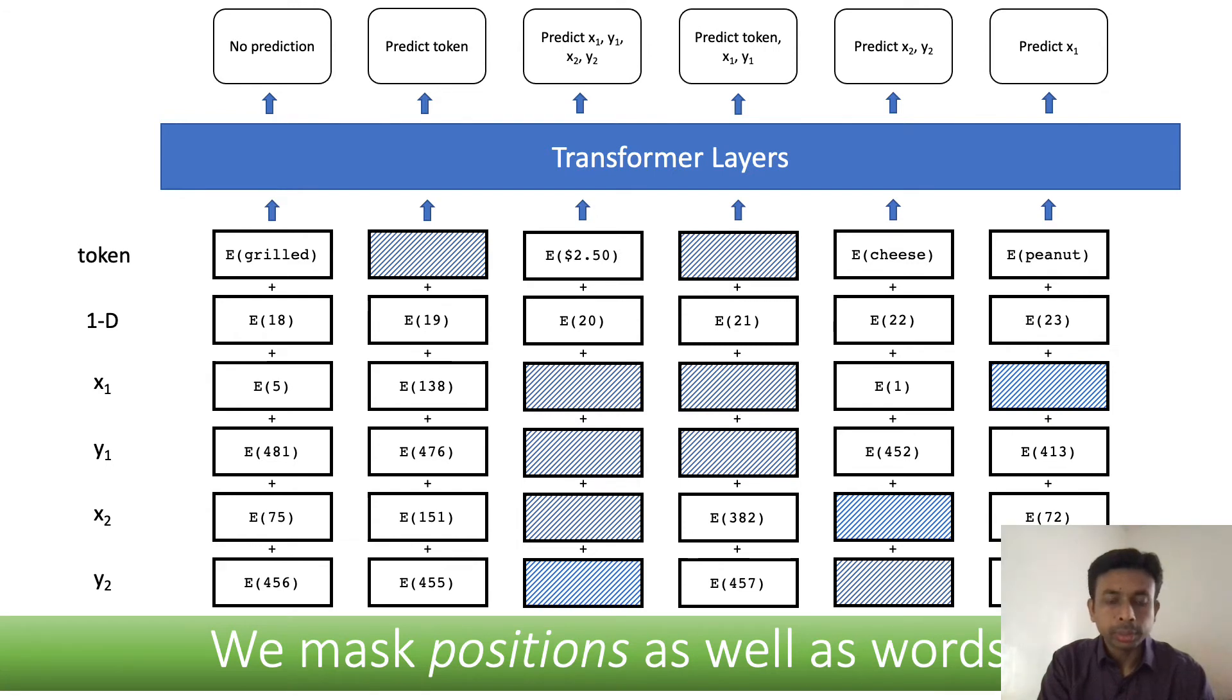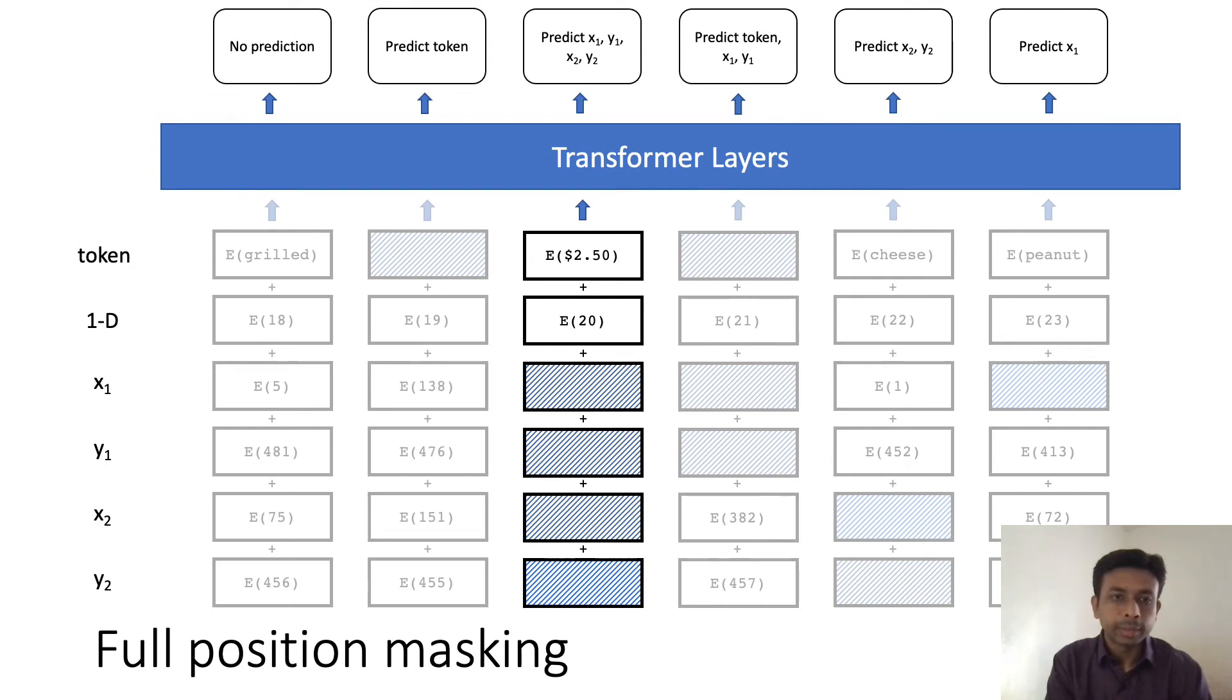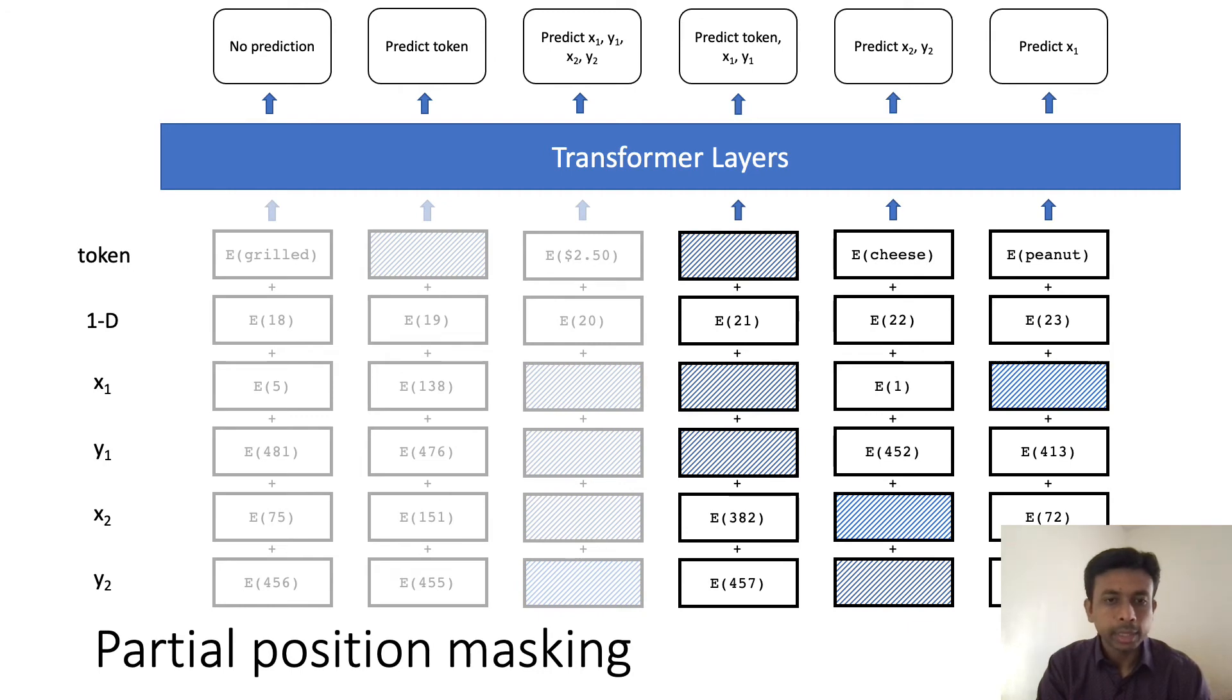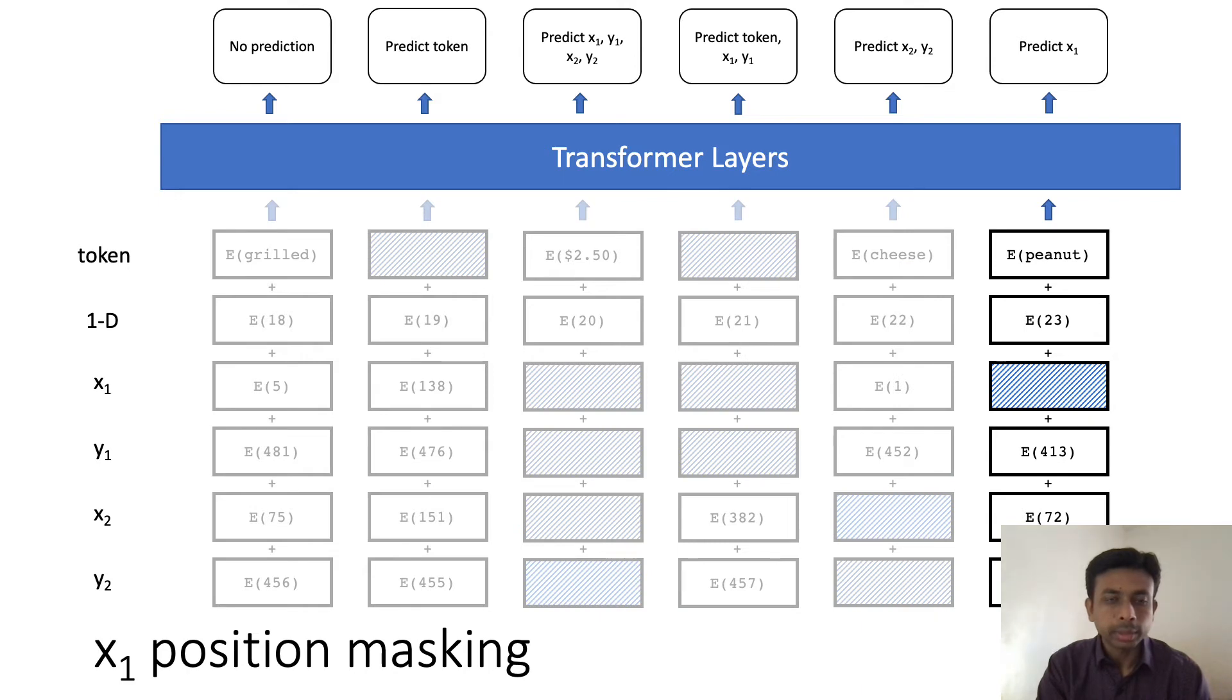In our model, we use the same 1D and 2D position embeddings, and on top of that we also add a position masking loss function where we mask these 2D position embeddings as well as the words. Now the task for the model is to predict the token and the position at the same time. We can do the position masking in different ways. One method is to mask all these different x-y coordinates. Another method would be to mask some of these positions. X1 position masking is masking just one x coordinate out of these four.